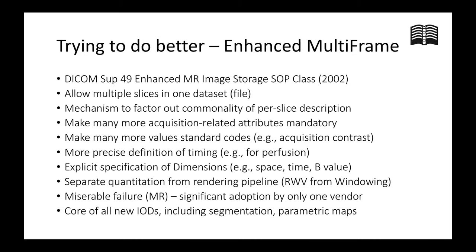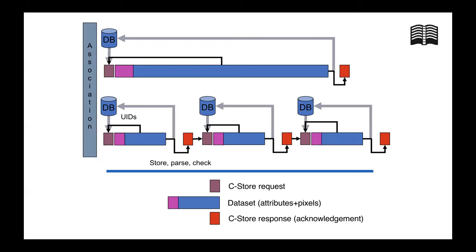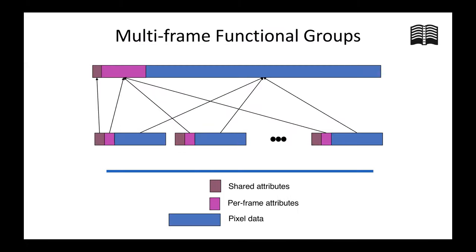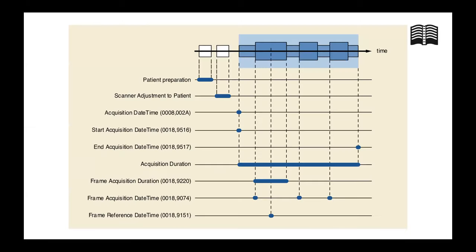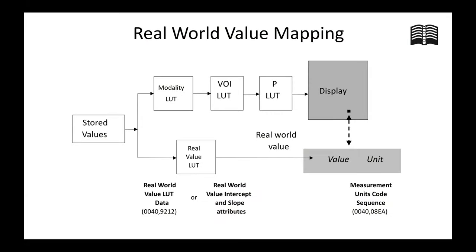In trying to do better, we introduced the so-called enhanced MR family of objects in about 2002. At that time we tried to solve a whole bunch of problems: multiple slices in one dataset, factoring out commonality per slice, more mandatory consistent acquisition-related attributes and codes, more precise definition of timing, explicit specification of dimensions, and separation of quantitation from the rendering pipeline. And it was a total failure — we were trying to solve a problem that had already largely been solved. Very few vendors picked it up. But it has become the basis of all new IODs, including segmentations and parametric maps.